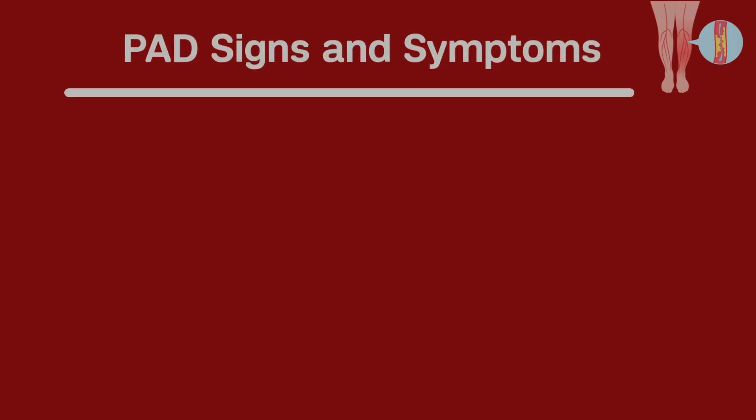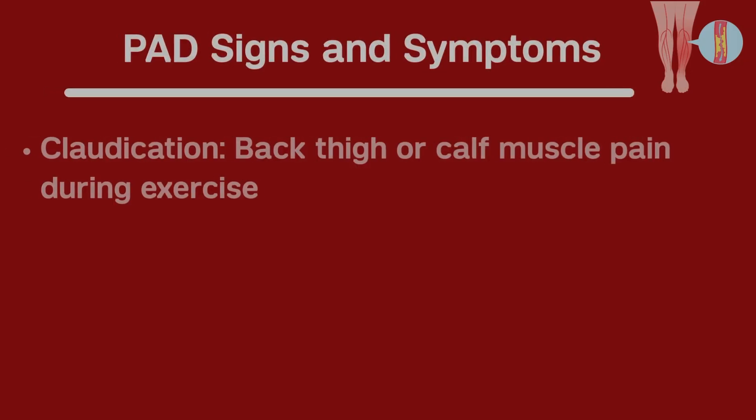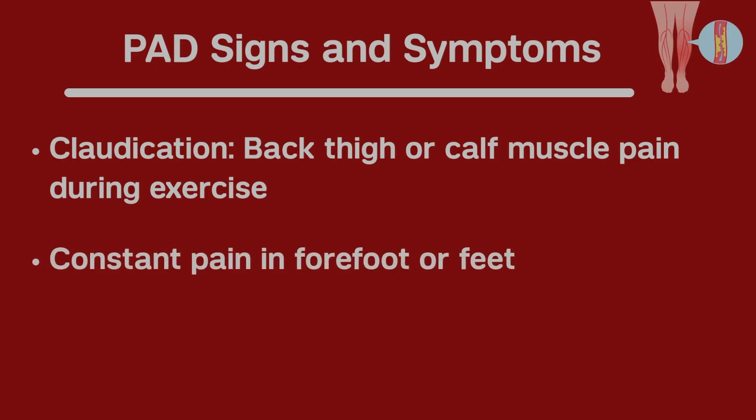One of the first symptoms that patients will develop is what we call claudication. Claudication simply means that as a patient exercises, they develop pain either in the back of their thigh or their calf muscle, more commonly. Some of the more serious symptoms can include somewhat constant pain in their forefoot or feet. This can be due to a number of issues, but one of the more serious ones is PAD that is so severe it's leading to inadequate oxygen delivery to the toes to even keep their basic tissues alive.